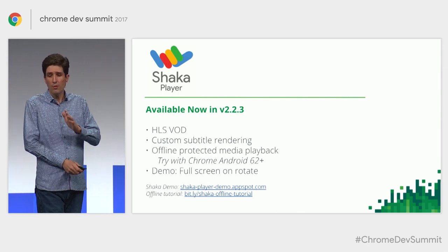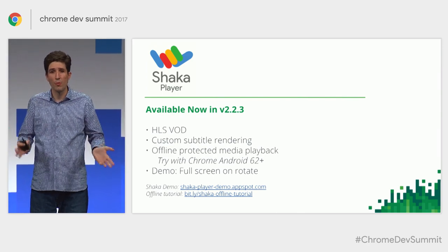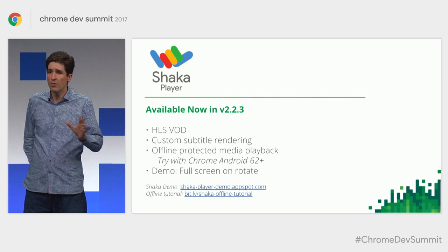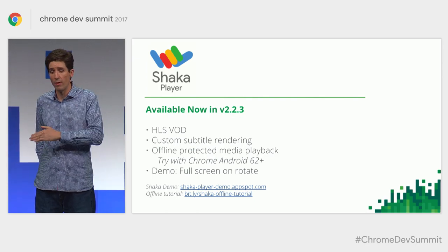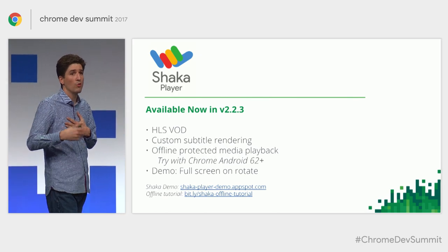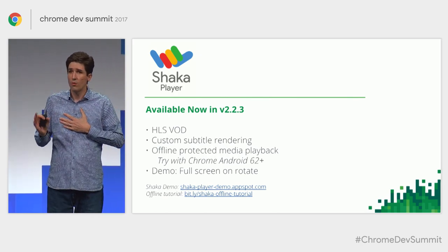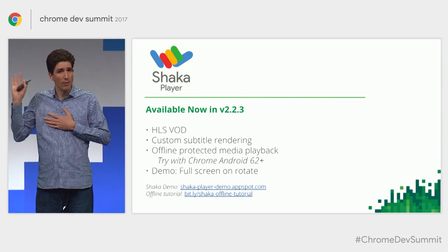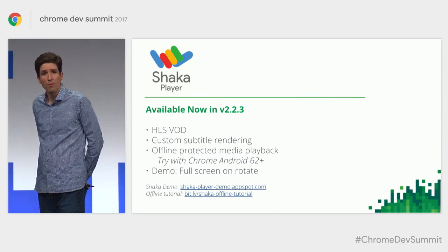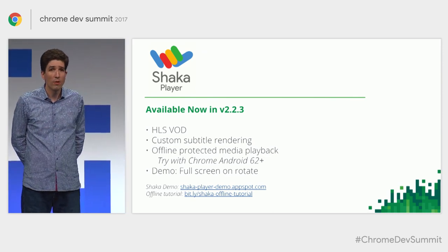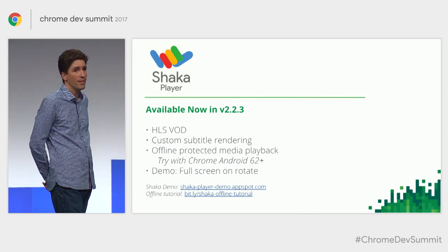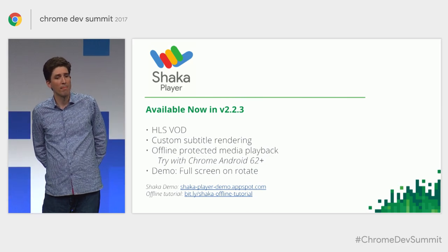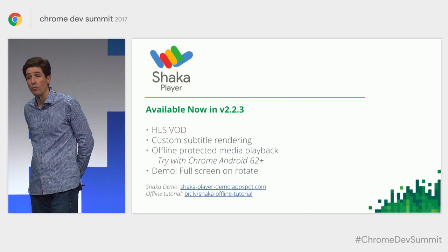Next, let's talk about Shaka Player. Shaka Player has Apple HLS support for on-demand content with fragmented MP4. It also allows sites to customize the rendering of Web VTT and TTML. And finally, it allows offline protected media playback — that's something you can try today in Chrome on Android 62 and later.